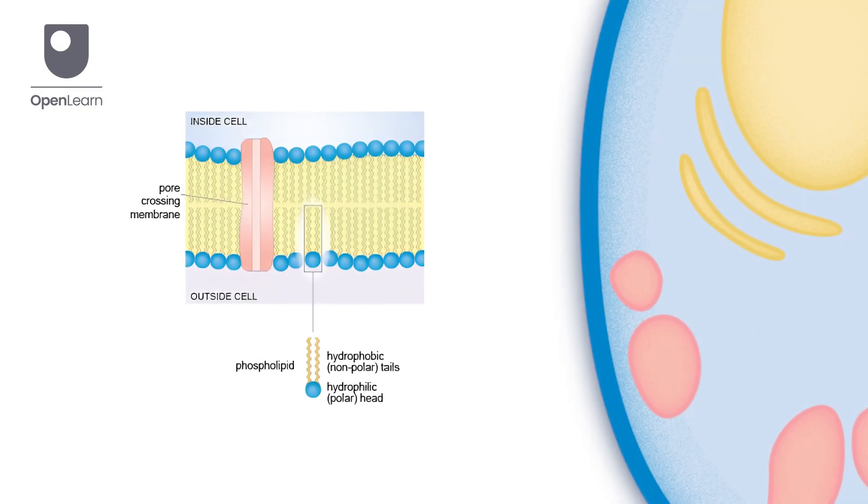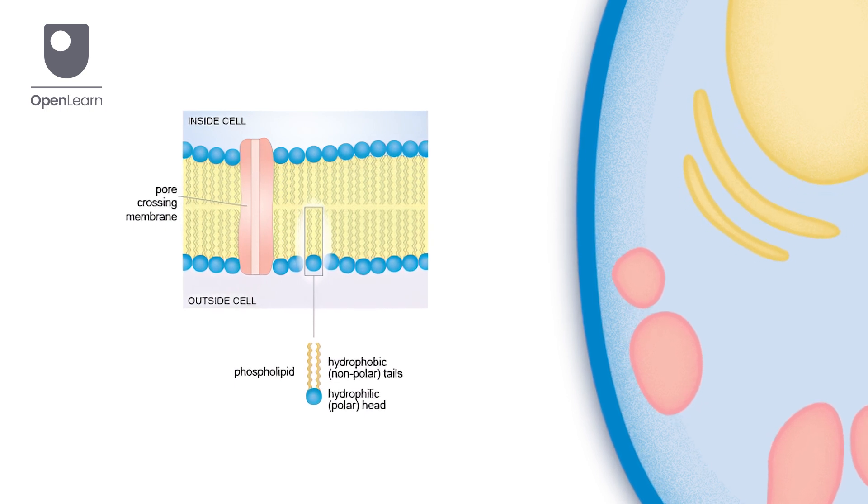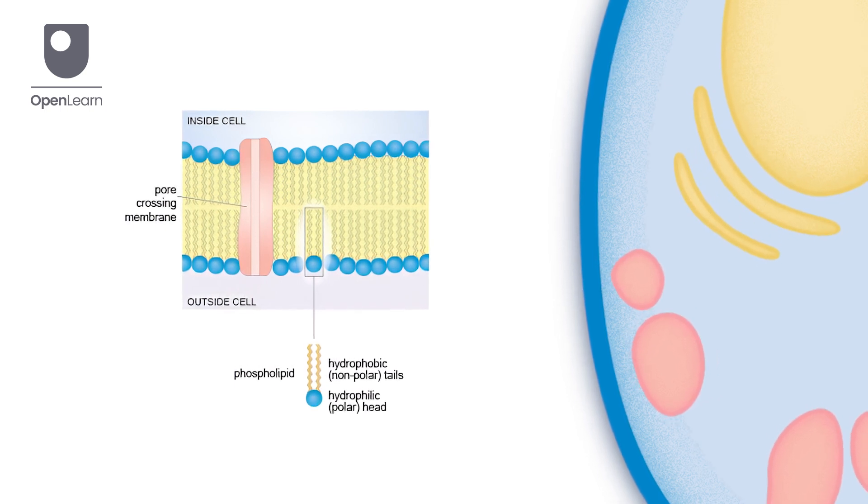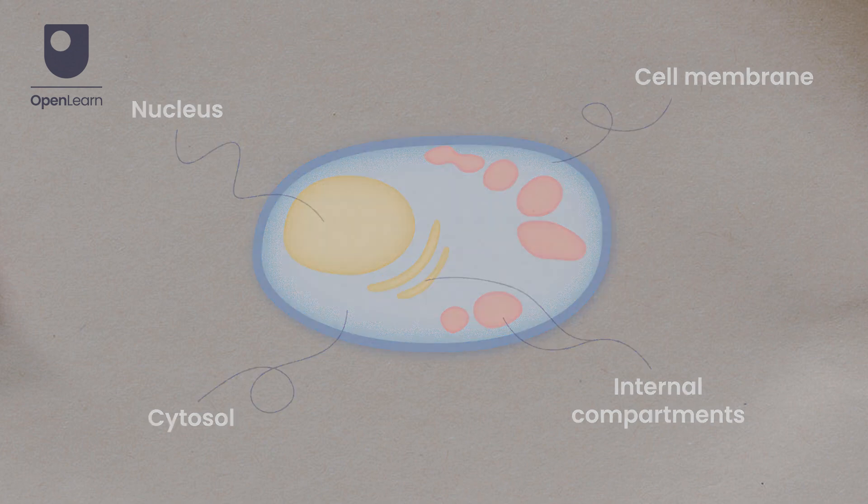It also controls the movement of molecules in and out of the cell that are essential for the cell to function. Inside the cell is a gel-like substance called cytosol, along with other structures that help the cell to function.